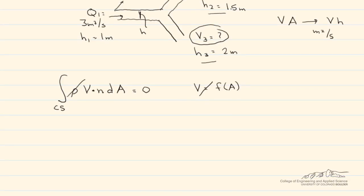What we end up with is V1·n times area 1, which because it's unit width we're just going to say H1, plus V2·n H2 plus V3·n H3 equals 0.